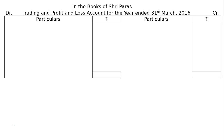The question is: the following is the trial balance of Sri Paras on 31st March 2016. You are required to prepare final accounts after giving effect to the following adjustments. In the books of Sri Paras, Trading and Profit and Loss Account for the year ending 31st March 2016.